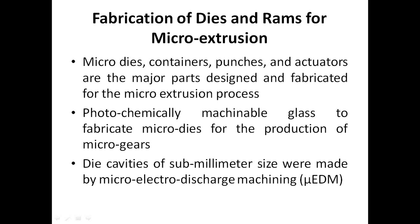Fabrication of dies and rams for micro-extrusion involves micro-dies, containers, punches, and actuators as major parts. Photo-chemically machinable glass is used to fabricate micro-dies for the production of micro-gears. Die cavities of sub-millimeter size were made by micro-electro-discharge machining, or micro-EDM.